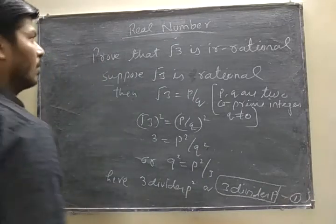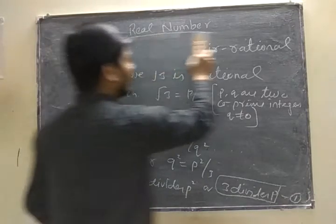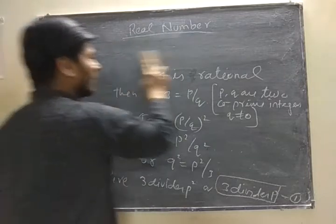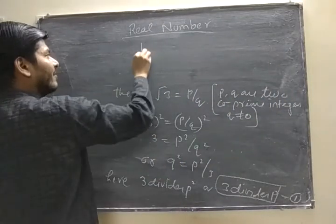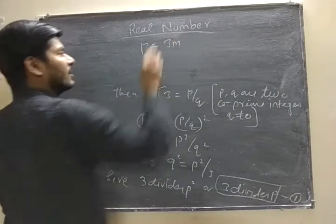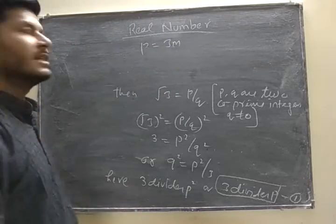Now put P is equal to 3M. If you solve √5, put P equals 5M. If you solve √7, put P equals 7M.